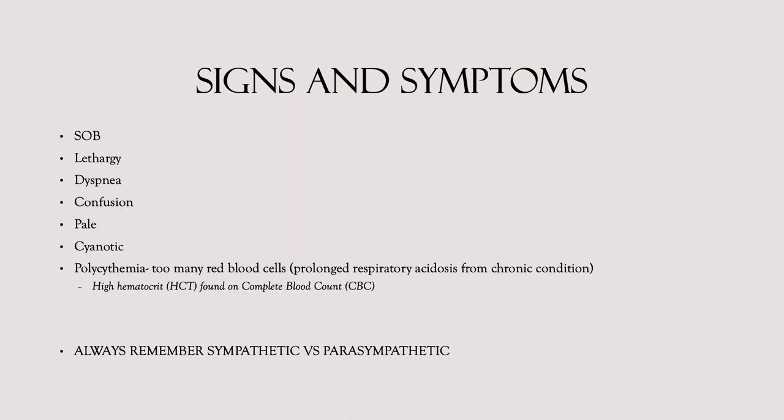Polycythemia occurs because the body produces too many red blood cells — it's like an alarm: calling all cars, we don't have oxygen, just make more red blood cells. They come flooding in but only have a little oxygen binding capacity, so these issues can make someone very ill. Remember, this is a hypoventilatory issue — the hypo side of things — not a hyperventilatory or sympathetic process.